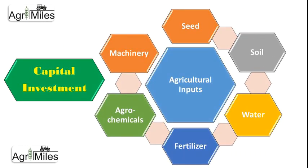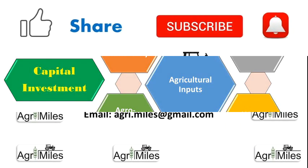All of these agricultural inputs have their own importance, but their value depends upon the availability of capital investment. If a farmer has financial resources and support, he can manage to buy all these agricultural inputs. But if he is unable to manage financial resources, he faces many difficulties. Governments can help farmers overcome financial barriers through the provision of subsidies or by providing free agricultural inputs.